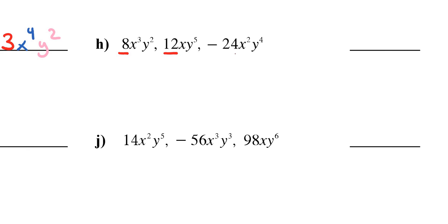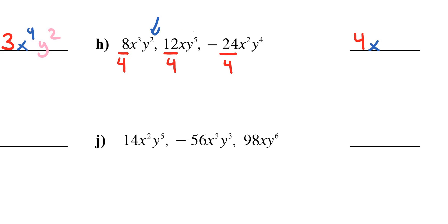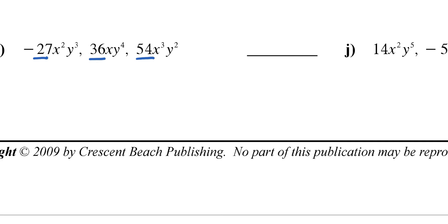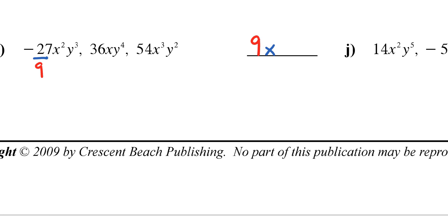For letter H with 8, 12, and 24, the biggest number dividing all three is 4. For x's with powers 3, 1, and 2, the smallest is 1, so keep a single x. For y's with powers 2, 5, and 4, the smallest is 2, so the GCF is 4xy². For the last problem with -27, 36, and 54, the biggest divisor is 9. For x's the smallest count is 1; for y's with powers 2, 4, and 3, the smallest is 2. So 9xy² is the GCF.